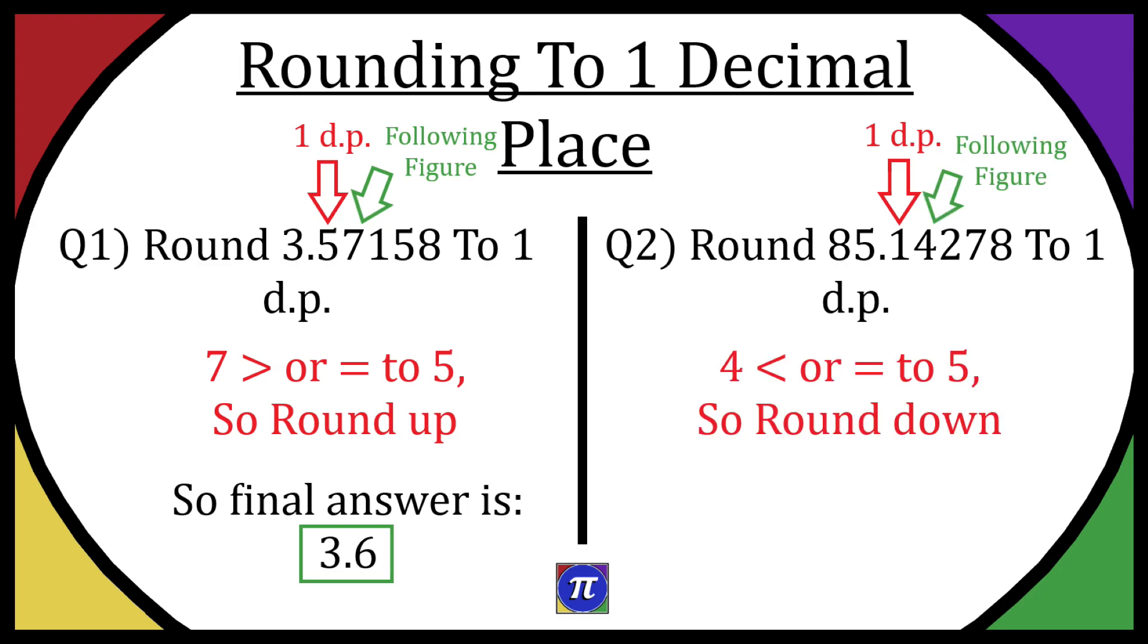Four is less than or equal to five, so we're going to round it down. It's going to be rounded to 85.1. So when you round down you kind of just keep it as is, and when you round up you add one to it.